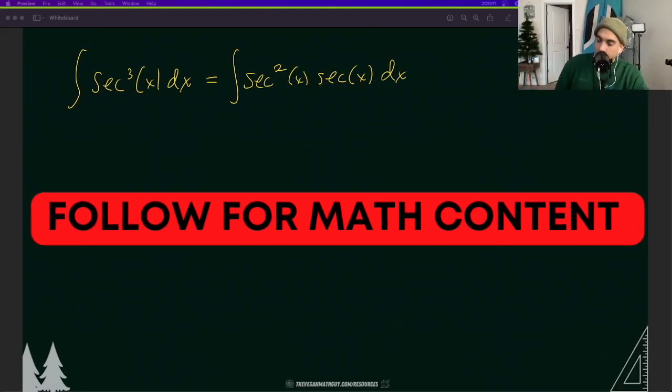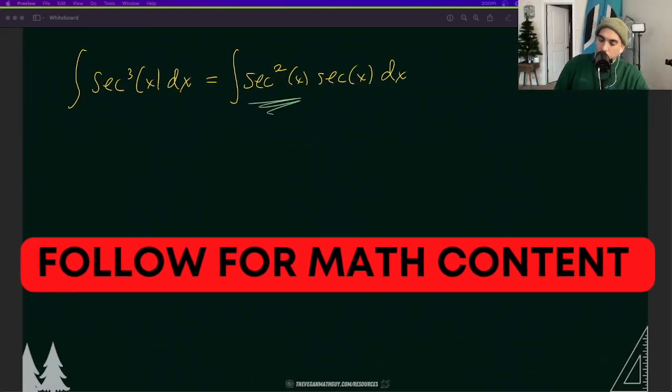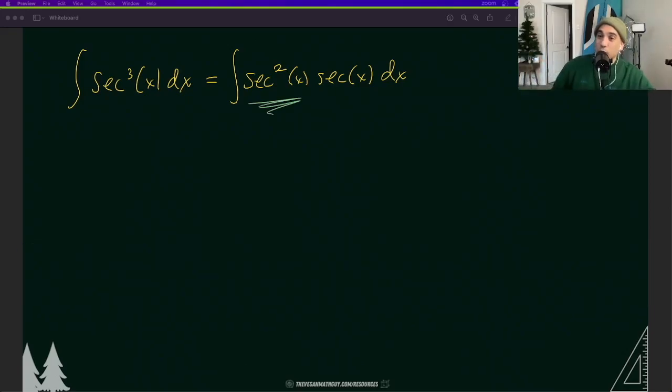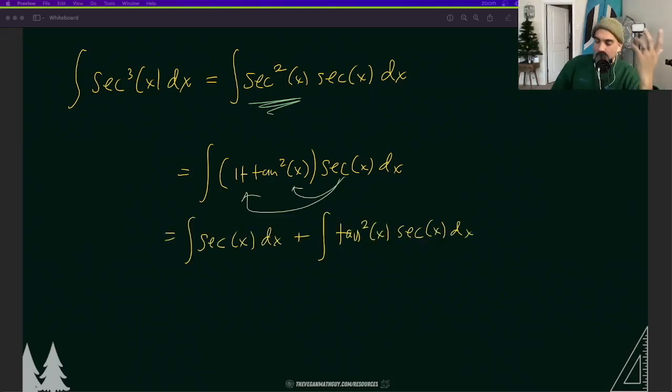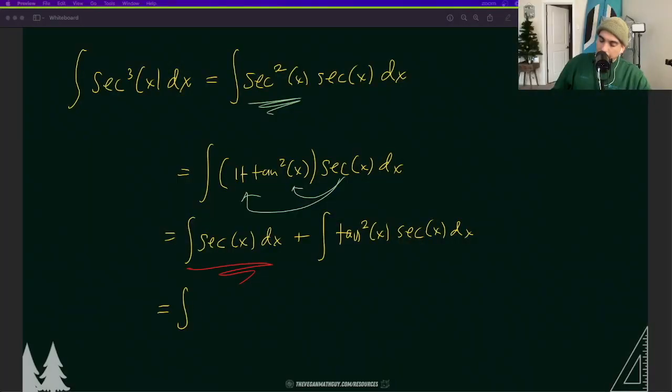Now I'm going to solve this a different way. I'm going to rewrite the secant squared x as one plus tan squared x because that's an identity. Let me distribute the secant x. Now we have two integrals. That secant x we already should know how to solve, it's something we should have memorized. Let me rewrite that second integral.